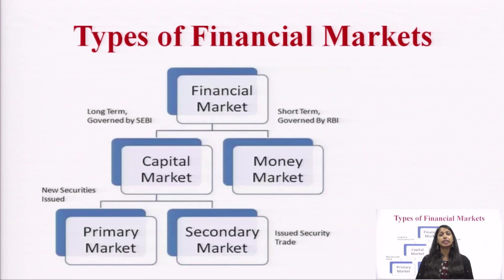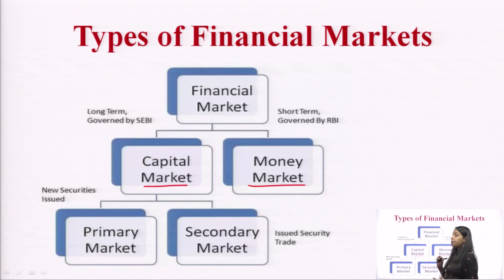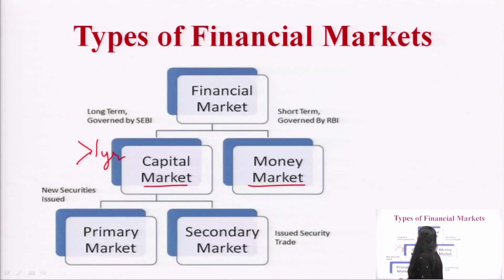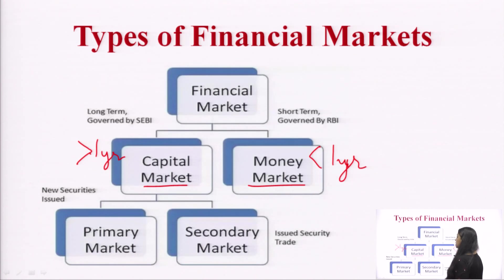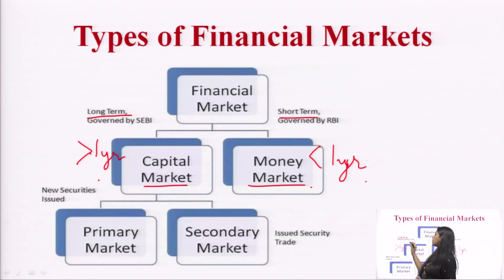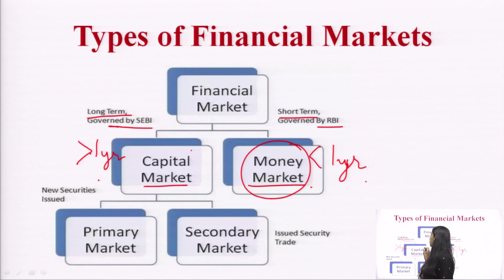There are two types of financial markets: capital market and money market. The major difference between them is the maturity period. For the capital market, maturity is more than one year — these are long-term funds. For the money market, maturity is less than one year — these are short-term funds. The capital market is governed by SEBI, while the money market is monitored by RBI.